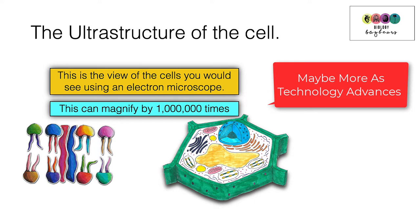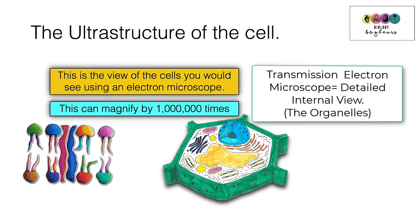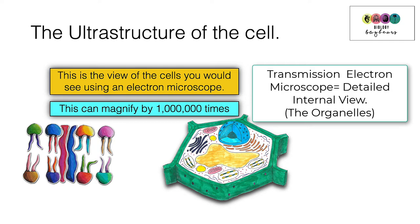Electron microscopes can magnify by up to a million times, giving a very detailed structure of the cell. There are two types: a scanning electron microscope, which gives a detailed three-dimensional picture of the outside of the cell, and a transmission electron microscope, which gives a very detailed enhanced picture of the internal view of the cell.